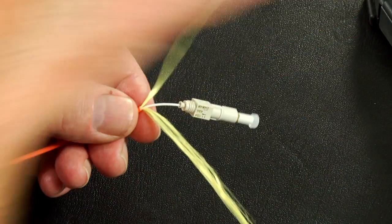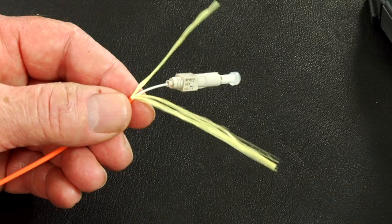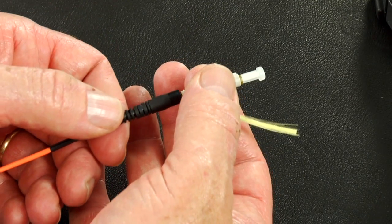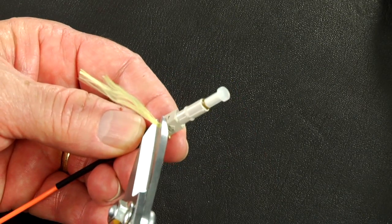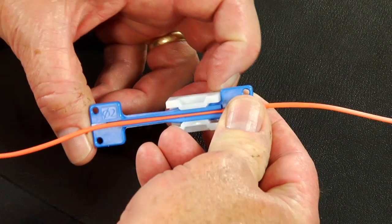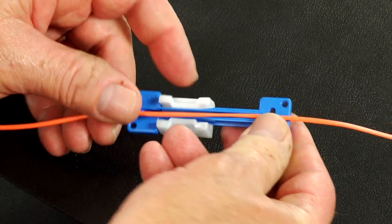Split the Kevlar equally to each side of the Kevlar grip. Slide the boot up and screw the boot onto the connector. Use the Kevlar scissors to trim the excess Kevlar. Unclamp and pull the cable out of the cable clamp.